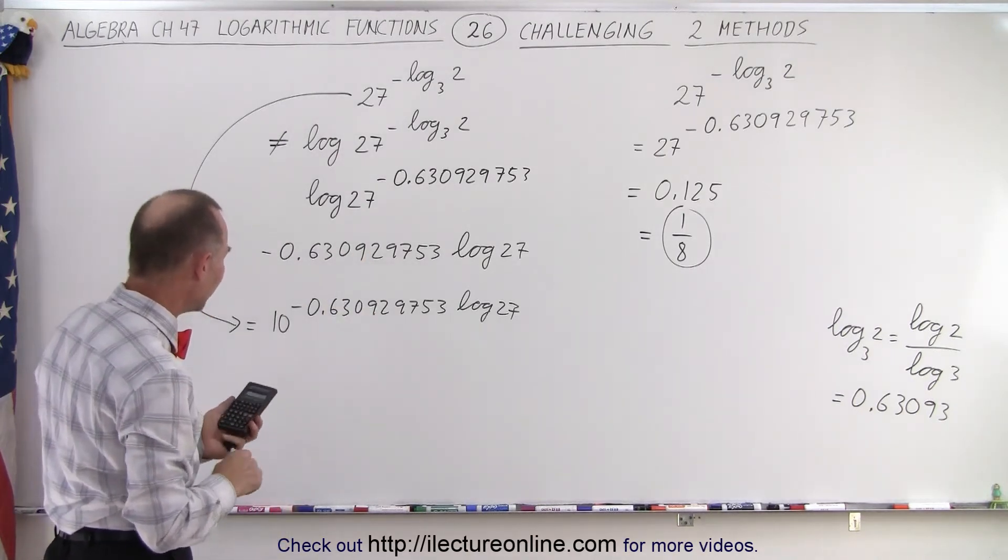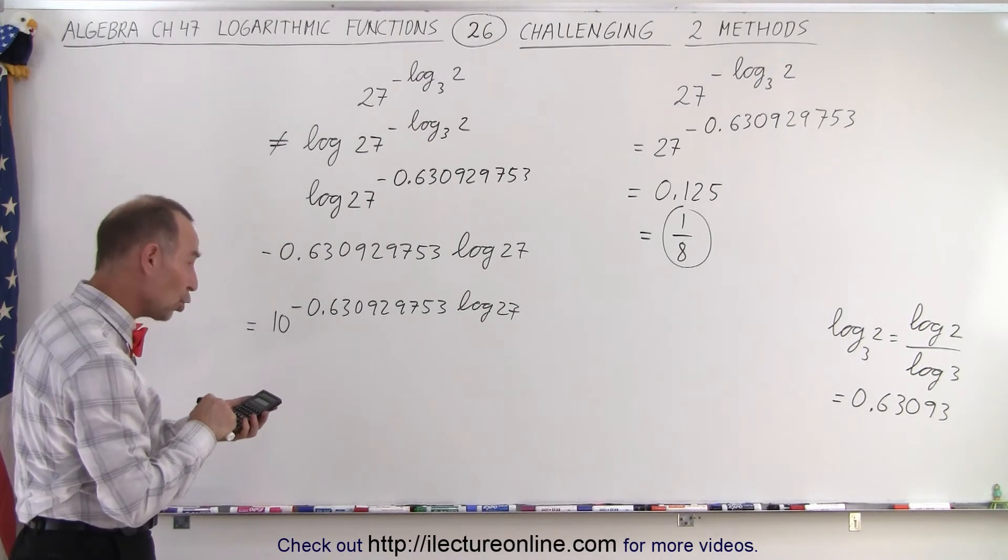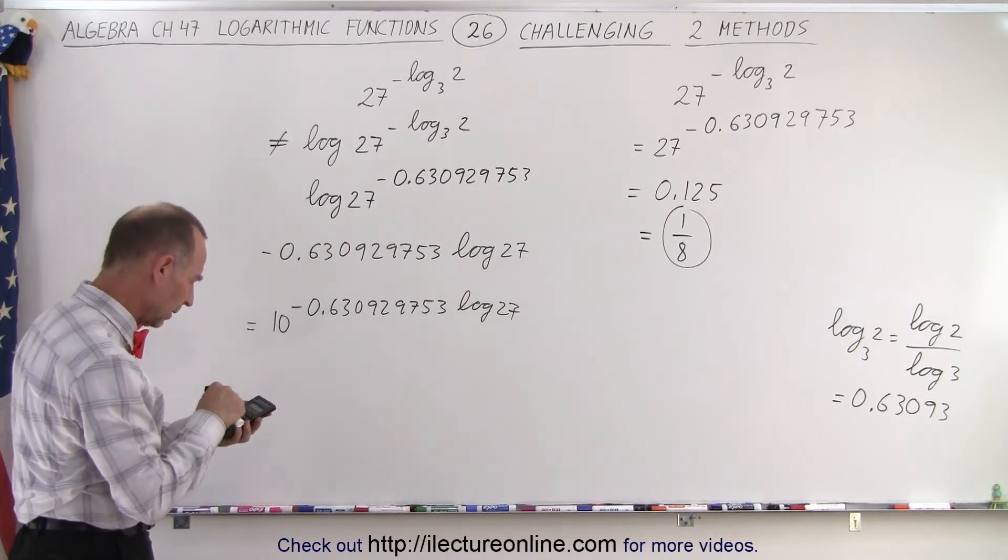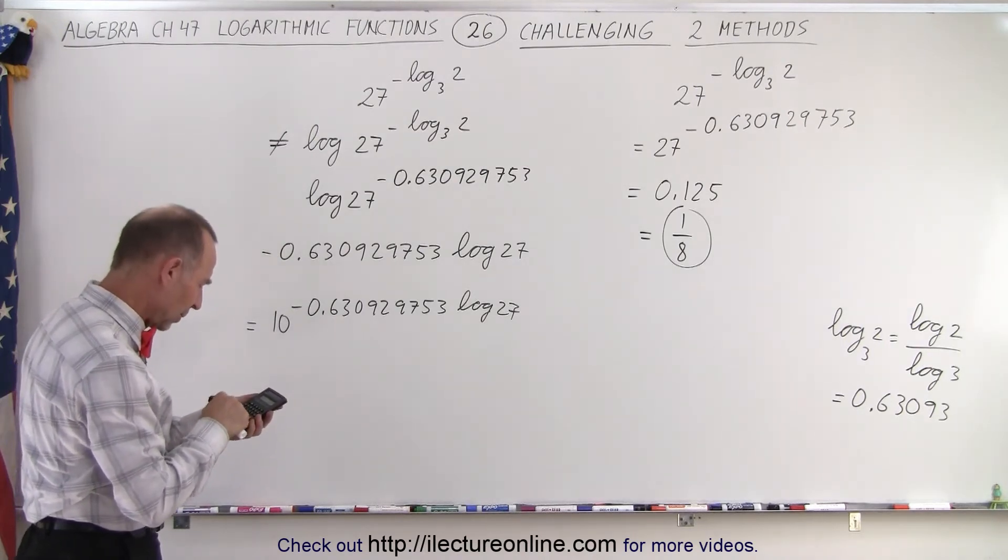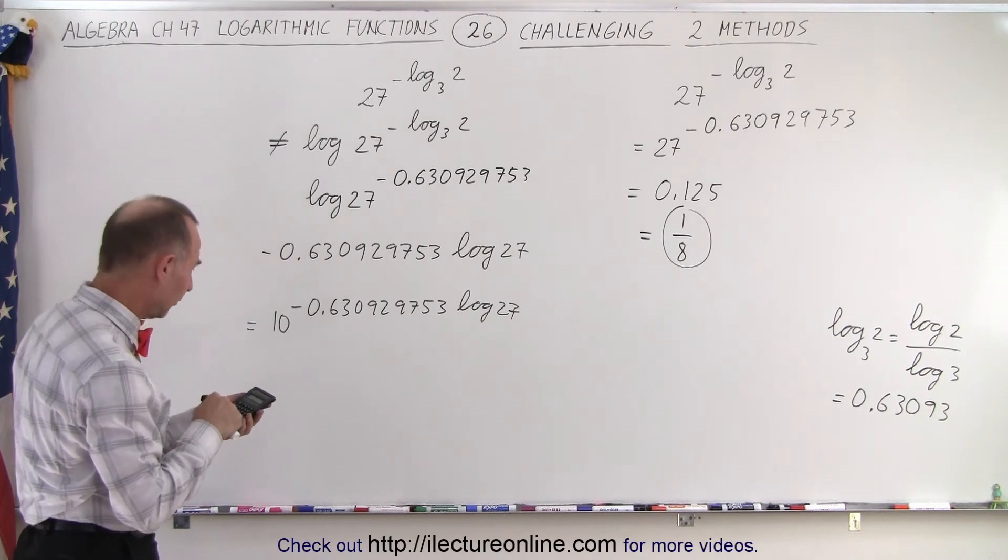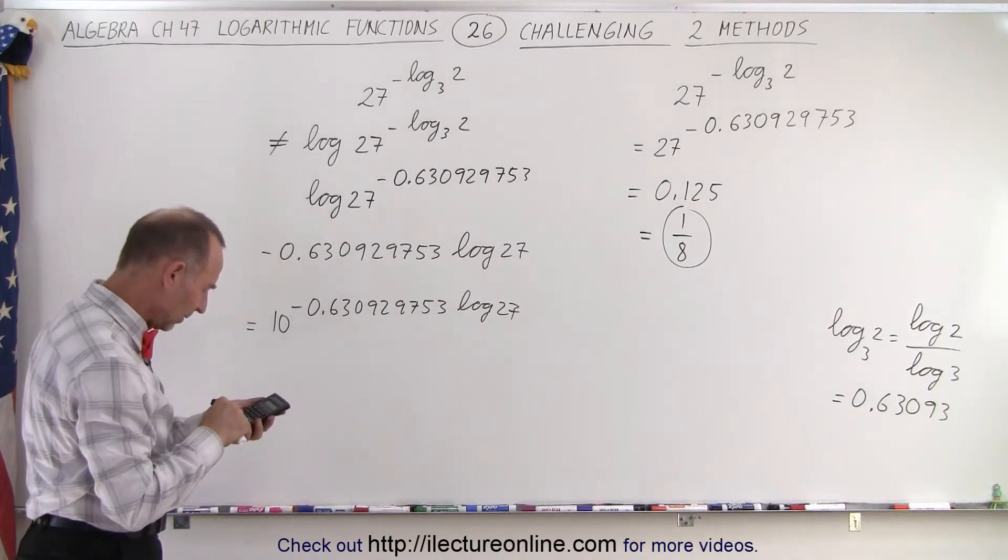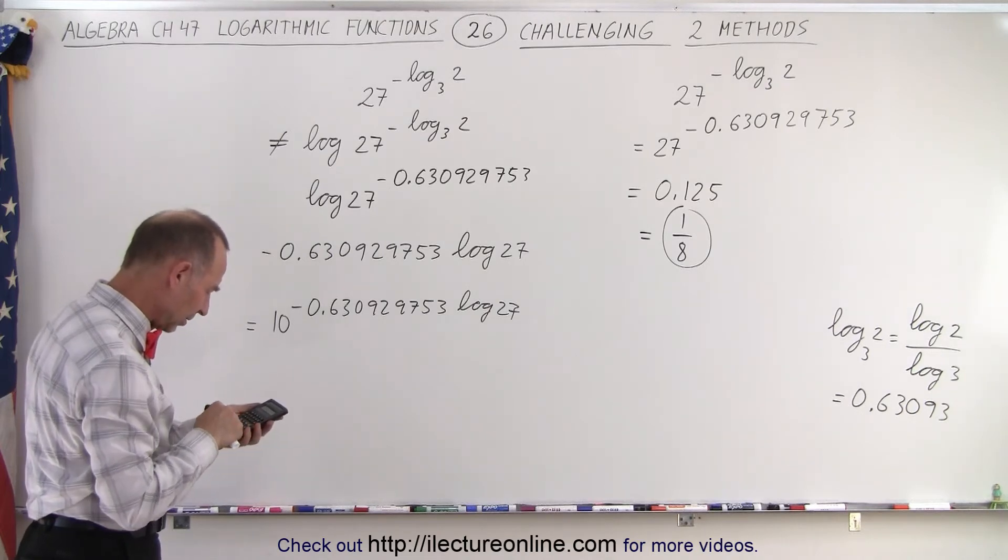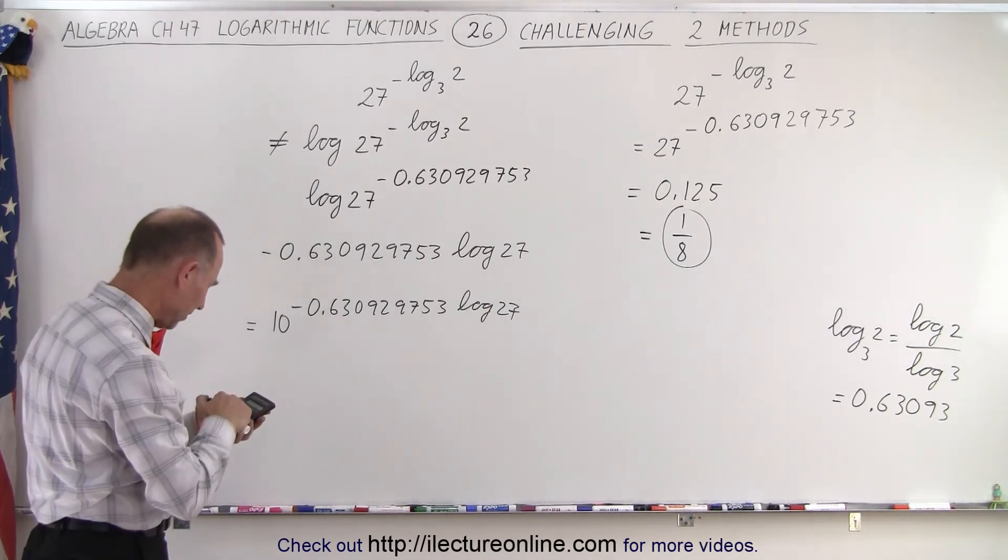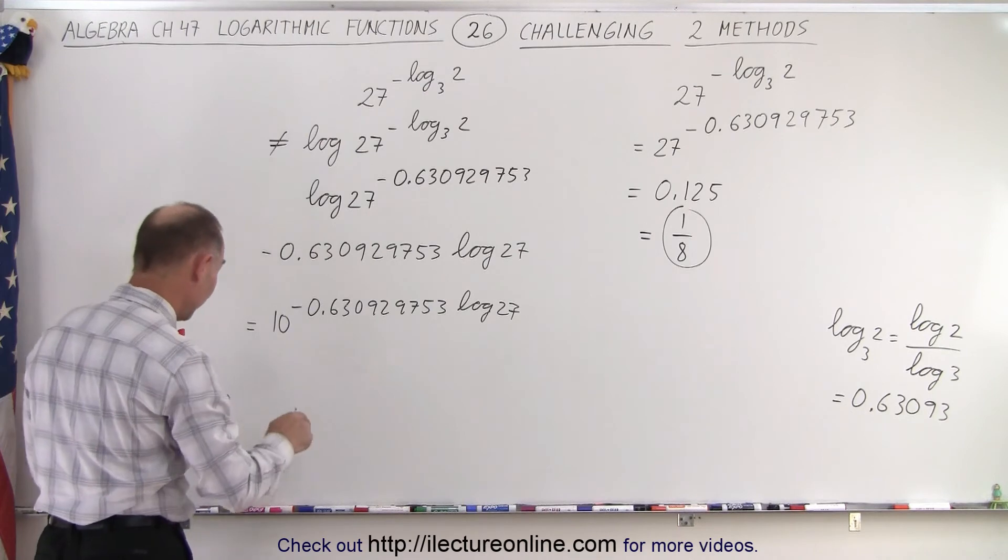All right, let's try that and see what we get. So we have 2, take the log, divided by 3, take the log, equals, that gives us this. Now we multiply that times 27, take the log, and we turn it into a negative. So now what we end up with is the following,